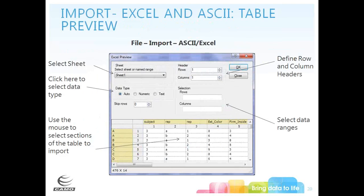When importing Excel or ASCII data, you get a table preview from which you can select the sheet, check the data type (numeric, text, or auto-detect), how many header rows to skip, and the ability to select specific rows or columns by typing or by highlighting within the preview window.